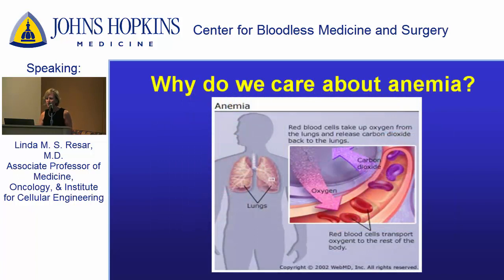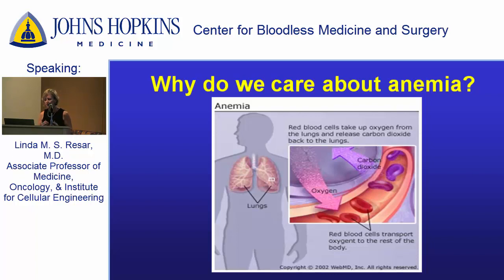Why do we care? Why do we need to know about anemia? These remarkable cells actually carry oxygen. They go into the lungs, load up with oxygen, and carry it to all of our tissues and organs — the brain, the heart, our muscles. Every tissue and organ needs them to function. That's really the remarkable property of red cells.